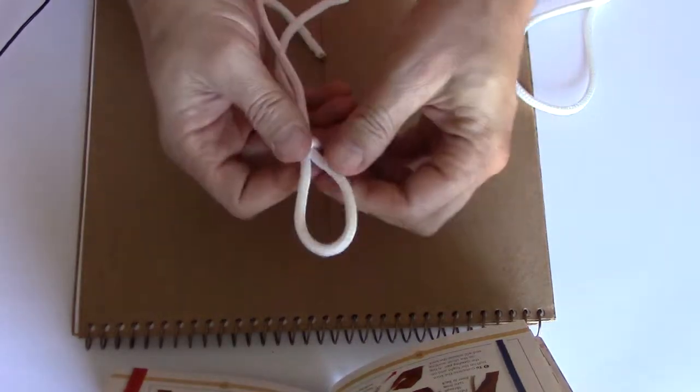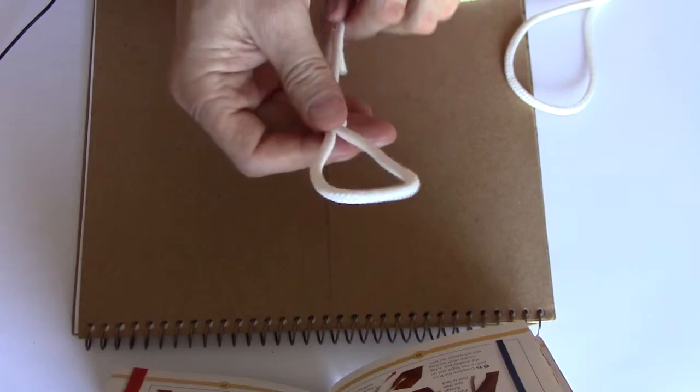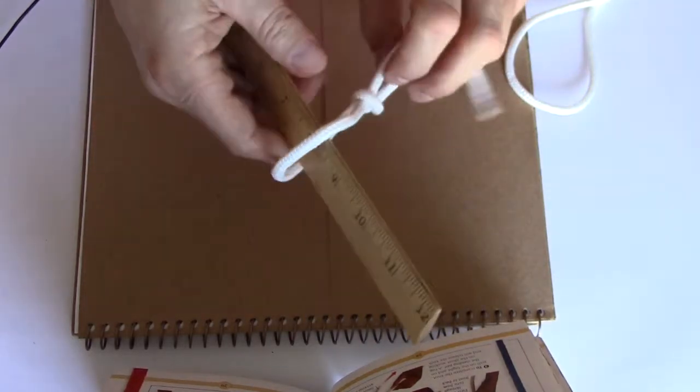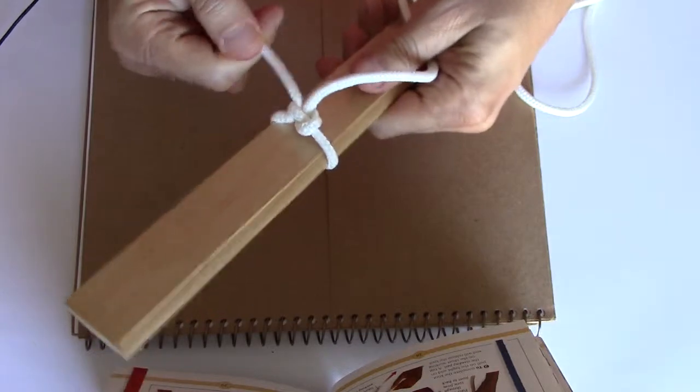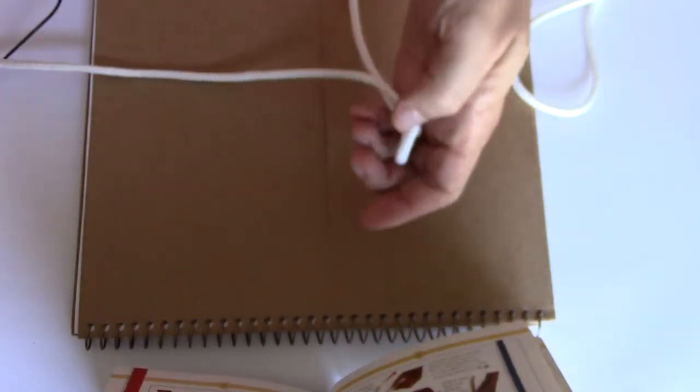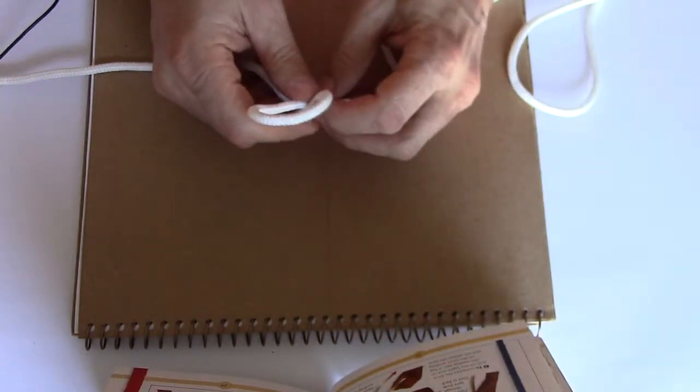And now what we did is we built sort of a slipknot type of overhand knot. So what you can do here is you can put this in and pull it tight. It makes a good knot to hold on to things. It's often used to attach to pilings or whatever you need to attach your rope to in a very quick manner.